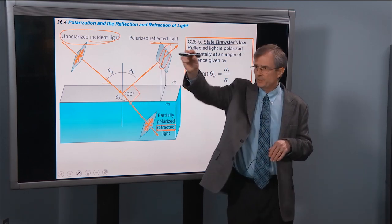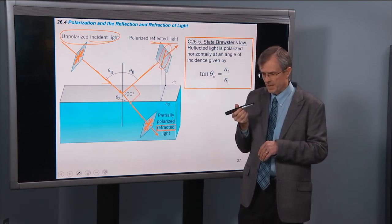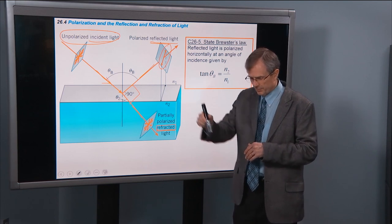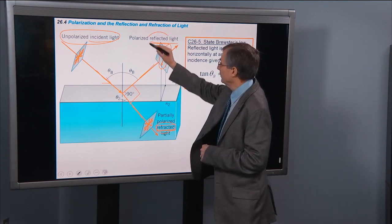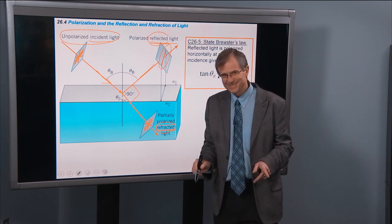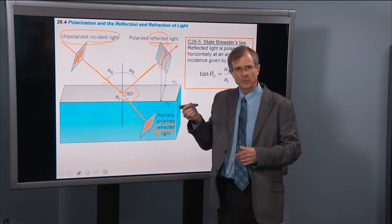If you've got a light source over there, it hits a surface, it reflects up into your eye, and if the refracted ray and the reflected ray are 90 degrees apart, then the reflected light will be horizontally polarized.